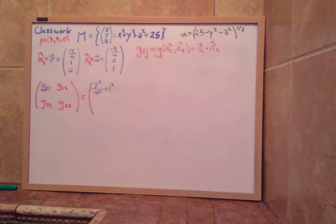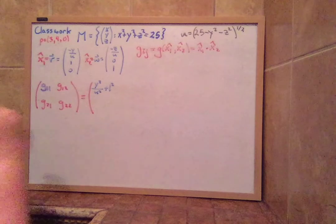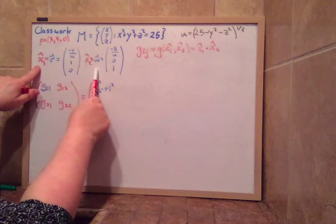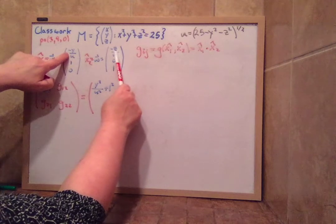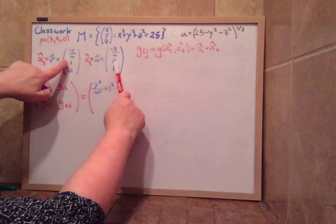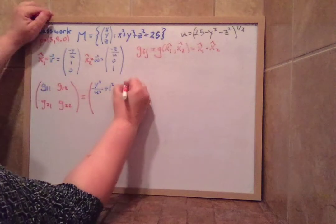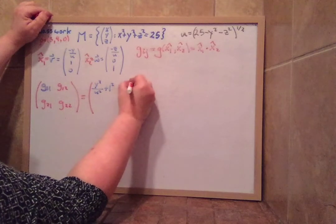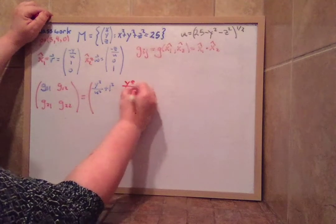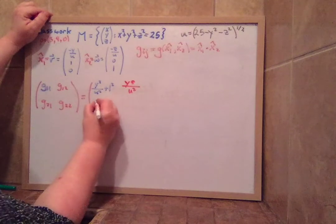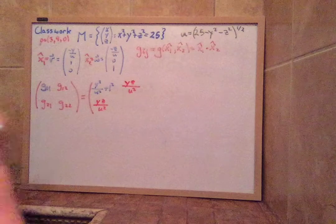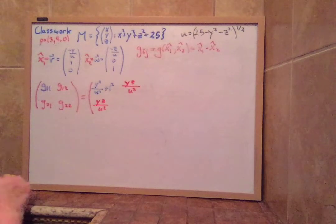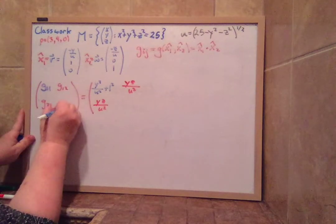Now for g12, that means we have to dot this guy with this guy. So now we'll have negative y times negative z becomes yz over u squared plus 0 plus 0. So this is yz over u squared and nothing more. And g21 is exactly the same, yz over u squared. And then g22 is found by taking x2 dotted with itself. So I get z squared over u squared plus 0 squared plus 1 squared.